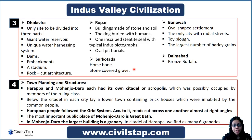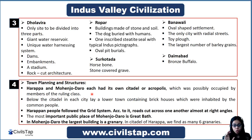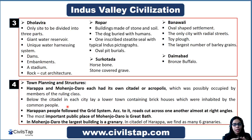Now we will see how town planning and structure worked. Harappa and Mohenjo-daro, the two most important cities of this civilization, both had their own citadel and acropolis, which was possibly occupied by members of the ruling class. This tells us that society had a high class and a lower class. The ruling class occupied the citadel and acropolis. Below that was the lower town with brick houses inhabited by common people. The Harappan people also followed the grid system — their roads cut across one another at right angles, making the road system very efficient.